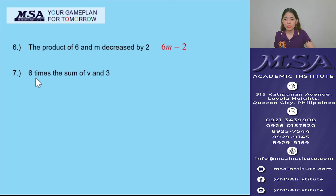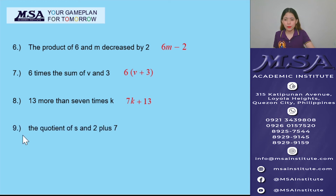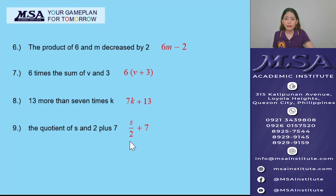Number 7: '6 times the sum of v and 3.' The sum of v and 3 is v plus 3, multiplied by 6. The translation is 6 times the quantity of (v + 3), written as 6(v + 3). Number 8: '13 more than 7 times k.' 7 times k is 7k, and 13 more than means plus 13. So the translation is 7k plus 13. Number 9: 'The quotient of s and 2 plus 7.' The quotient of s and 2 is s over 2, plus 7. The translation is s/2 plus 7.